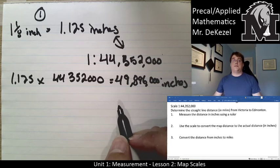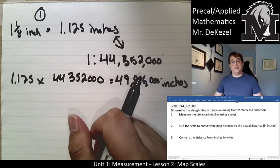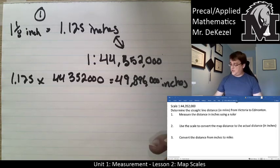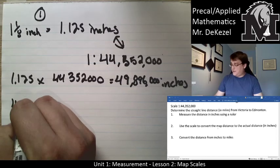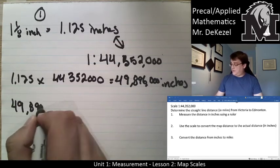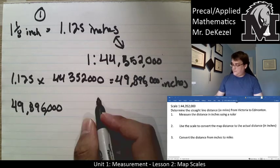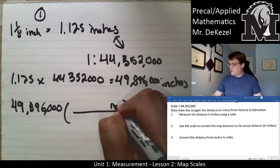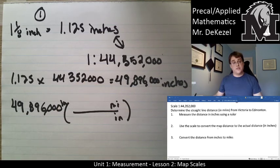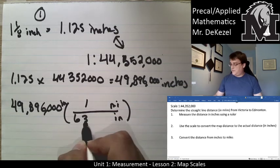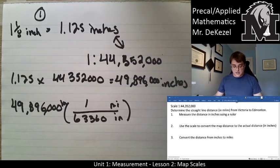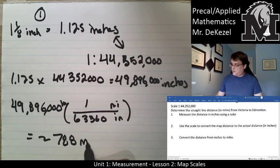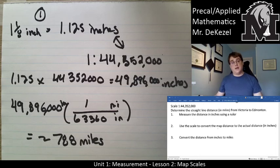That's a lot of inches, so it's not really helpful to understand how far apart two cities are. Question three is to convert the distance from inches to miles. So if we know it's 49,896,000, we are going to have what we want on top, which is miles, and what we have on the bottom, which is inches. One mile equals 63,360 inches, which equals approximately 788 miles, which makes sense.